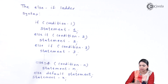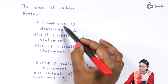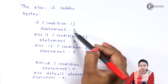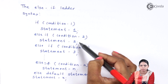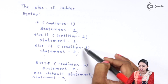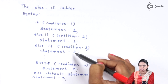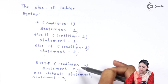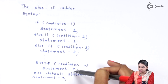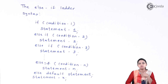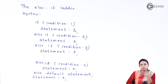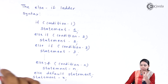Next is the else-if ladder. The syntax is: if condition 1, execute statement 1; else if condition 2, execute statement 2; else if condition 3, execute statement 3; and so on up to else if condition N, execute statement N; else execute the default statement. In else-if ladder, you check multiple conditions. We'll understand it with an example.